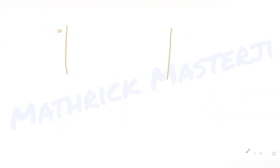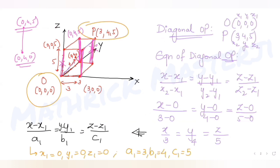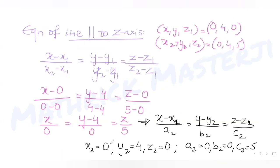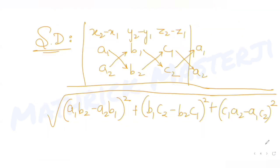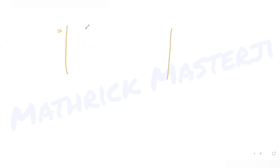Substituting the values: x2 - x1 = 0 - 0 = 0, y2 - y1 = 4 - 0 = 4, z2 - z1 = 0 - 0 = 0. So the first row of the determinant is (0, 4, 0). The second row is (a1, b1, c1) = (3, 4, 5) and the third row is (a2, b2, c2) = (0, 0, 5).